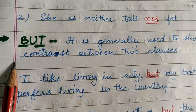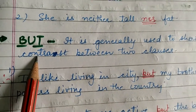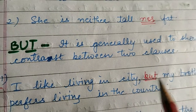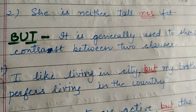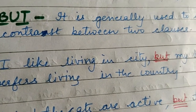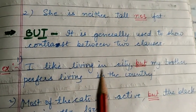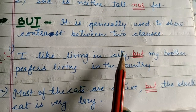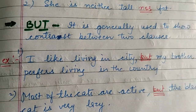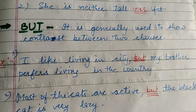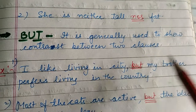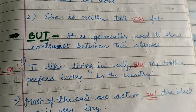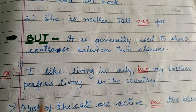Now let's come to the next conjunction: 'but'. But is also very commonly used in our sentences. It is generally used to show the contrast between two clauses — contrast ko show karte hai, difference ko show karte hai. This conjunction 'but' shows contrast, shows a difference. When we want to show a contrast or opposition — opposite chezon ko batate hain — we use 'but'.